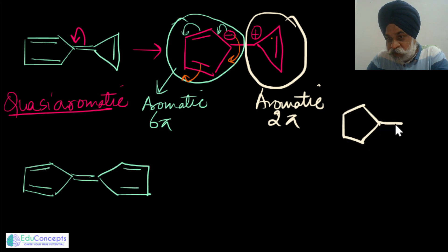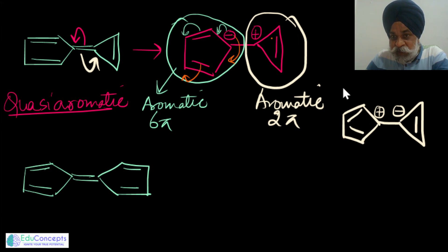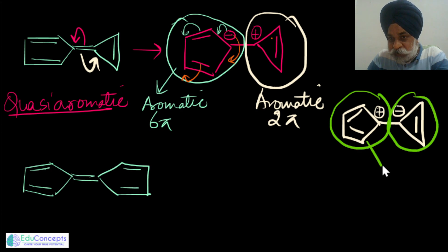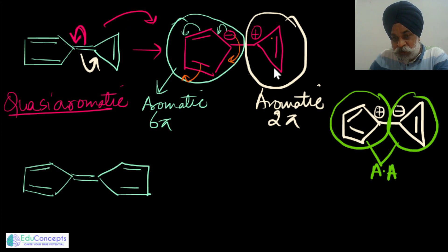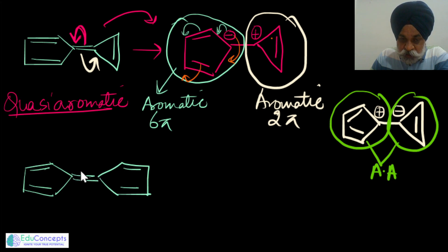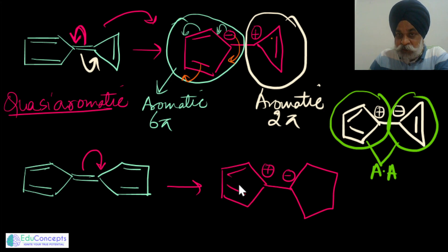Now, why would polarization not go in the opposite direction? If the polarization is done in the reverse way, both cyclic entities become anti-aromatic. Since anti-aromaticity is unstable, it would not proceed that way. Therefore, the compound exists in the polarized form. In the second structure, both five-membered rings are identical, so whichever way you polarize, one species becomes a cation and the other an anion — one becomes anti-aromatic, the other aromatic.